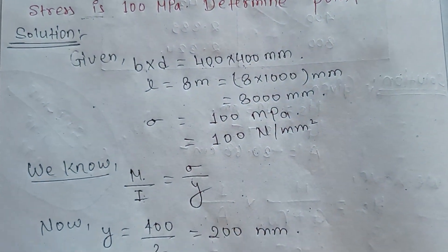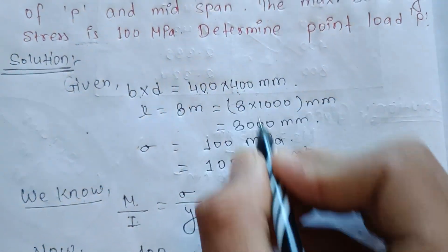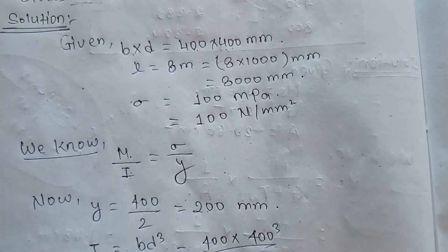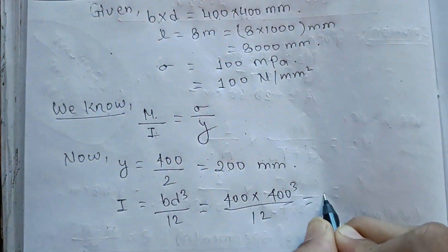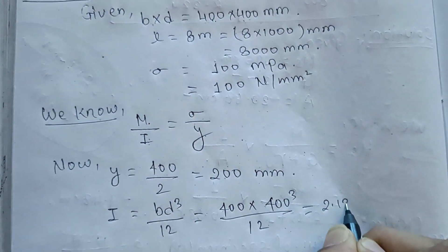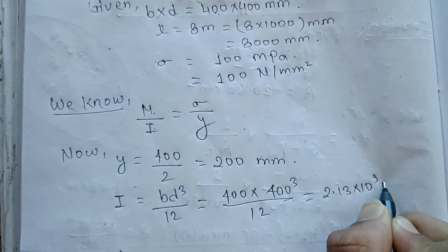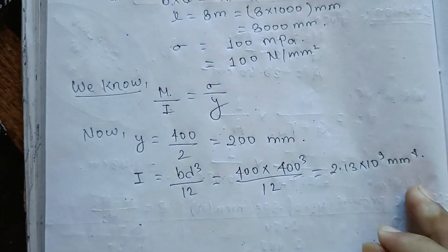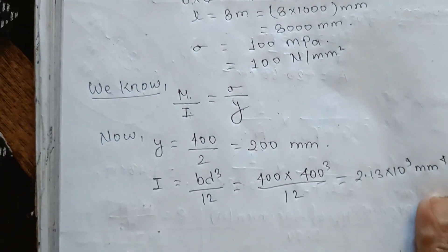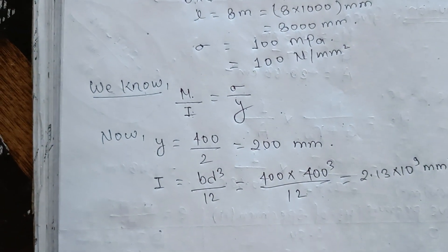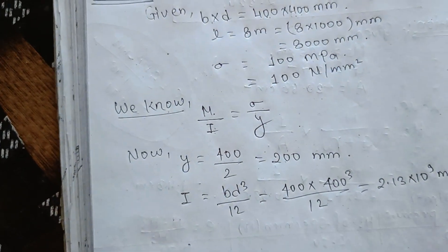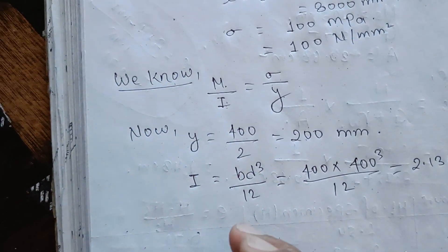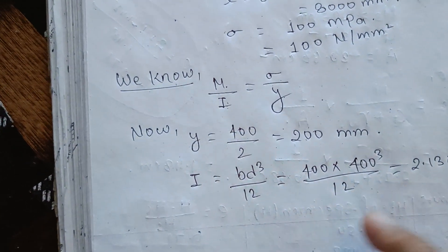b is 400, d is 400. So I equals bd cubed by 12, which gives 400 cubed by 12. The answer is 2.13 into 10 to the power 9 mm to the power 4. This is the moment of inertia value in mm⁴.